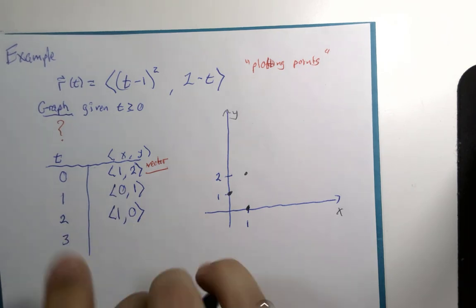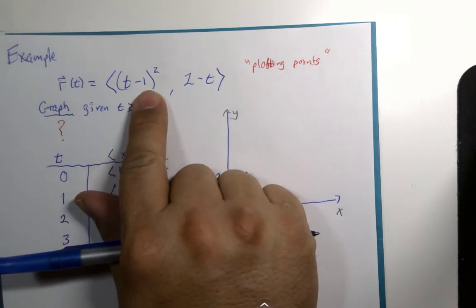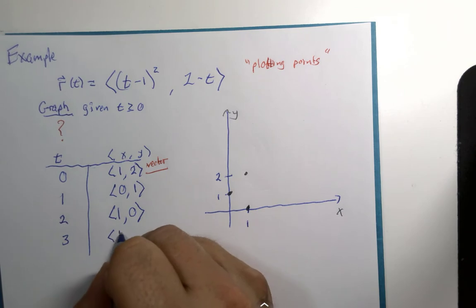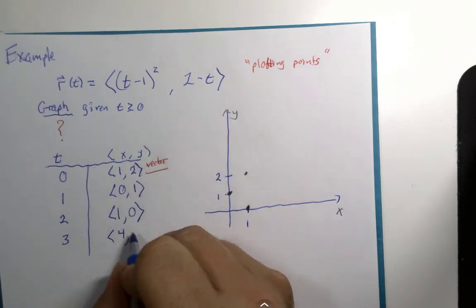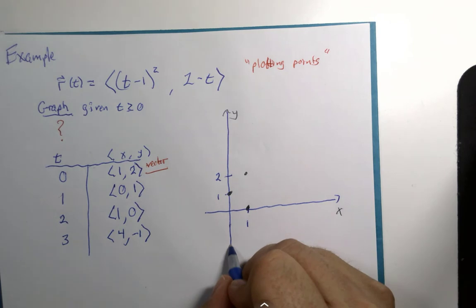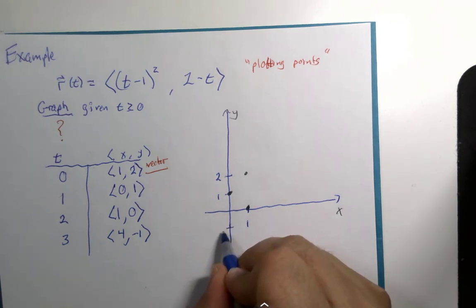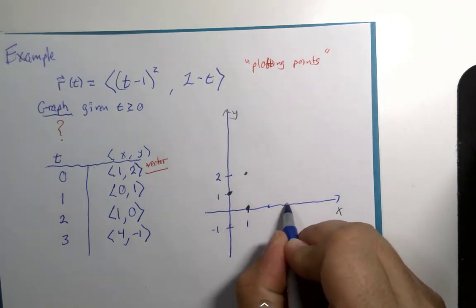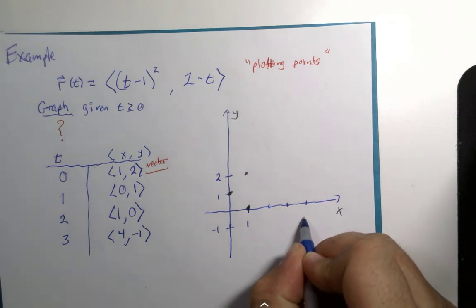Three: three minus one is two, two squared is four. Two minus three is negative one. And let's just go a little bit further with this here. Two, three, four, negative one.